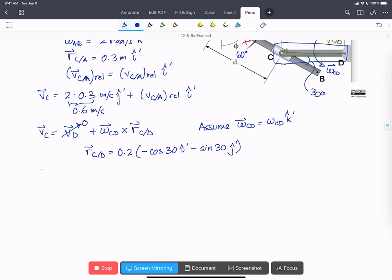All right, so let's do this cross product, and we get v C equals omega CD times 0.2, and it's going to be k cross minus i is minus j, so minus cos 30 in the j-hat prime, and k cross minus j is positive i, so plus sin 30 in the i-hat prime.